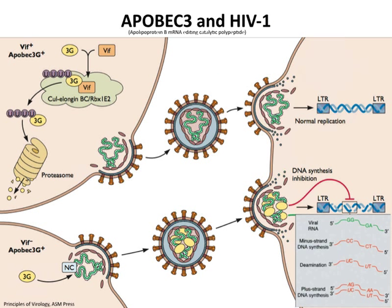Another example of an intrinsic antiviral protein is APOBEC — apolipoprotein B mRNA editing catalytic polypeptide — one of the most horrible names ever given to a protein, but it's stuck. This protein, as far as we know, is specifically tailored to interfere with HIV-1 infection. This is very interesting because HIV-1 only entered us in the early 1900s, so APOBEC has been around much longer than that. APOBEC is a cytidine deaminase — it takes the amino group away from the cytidine molecule.